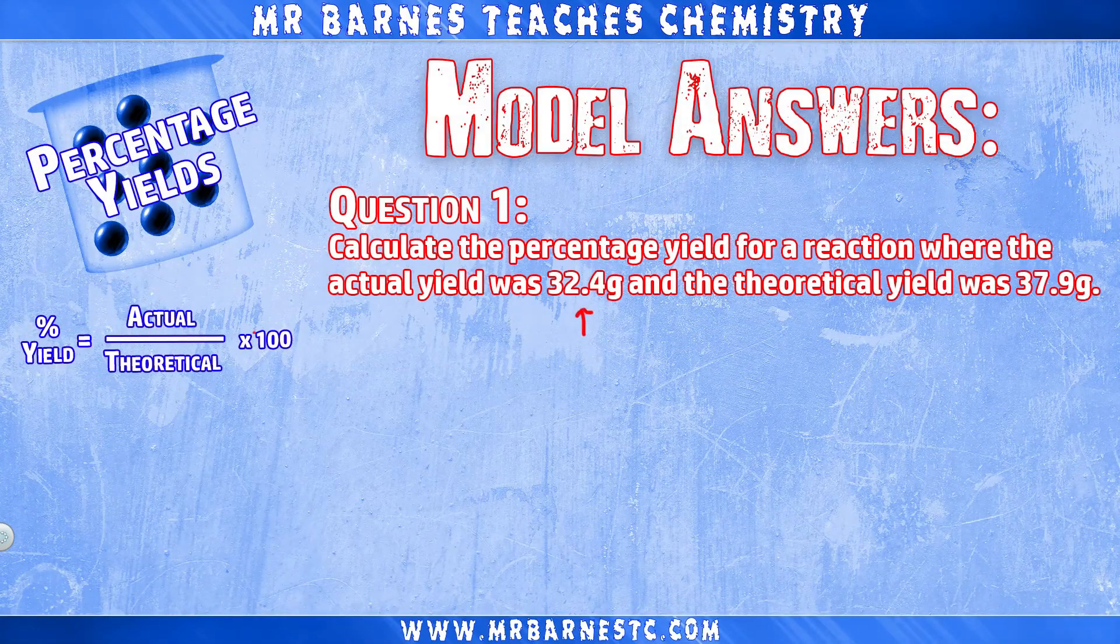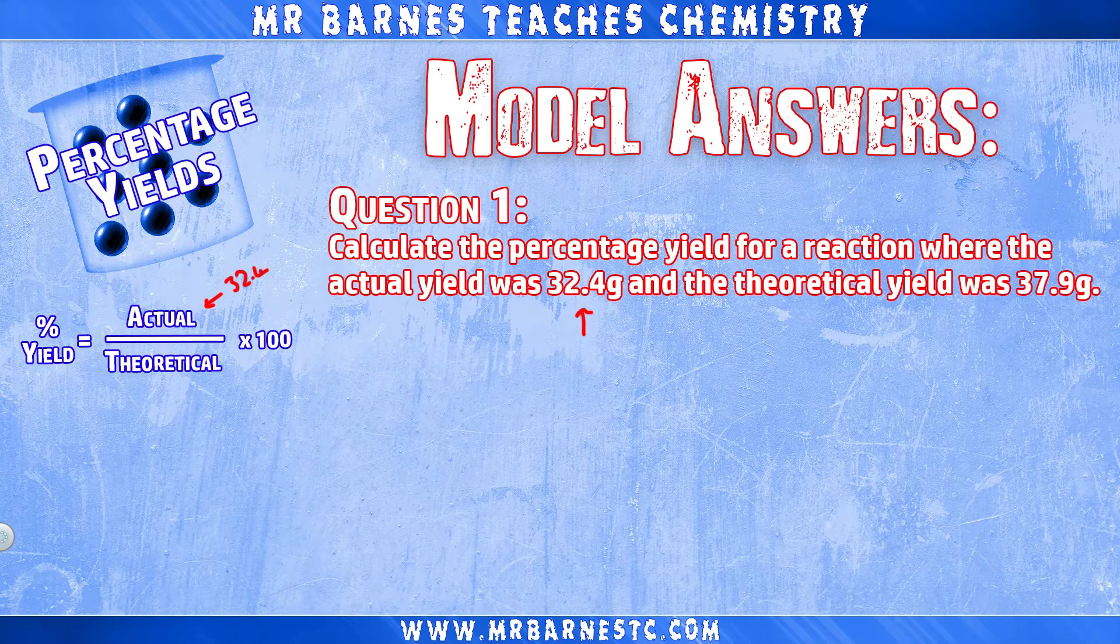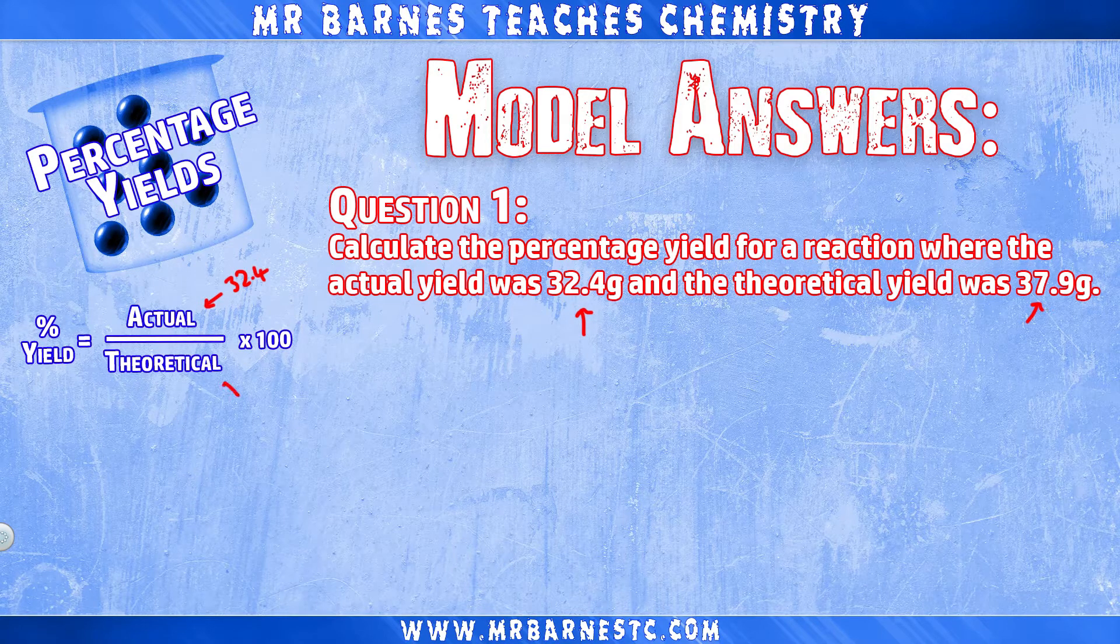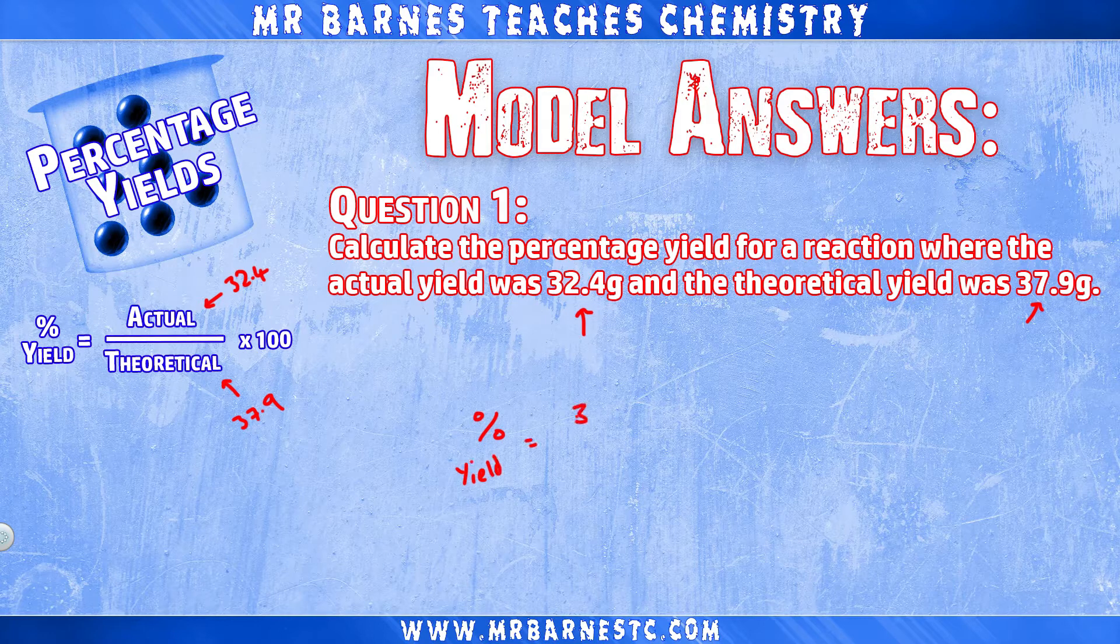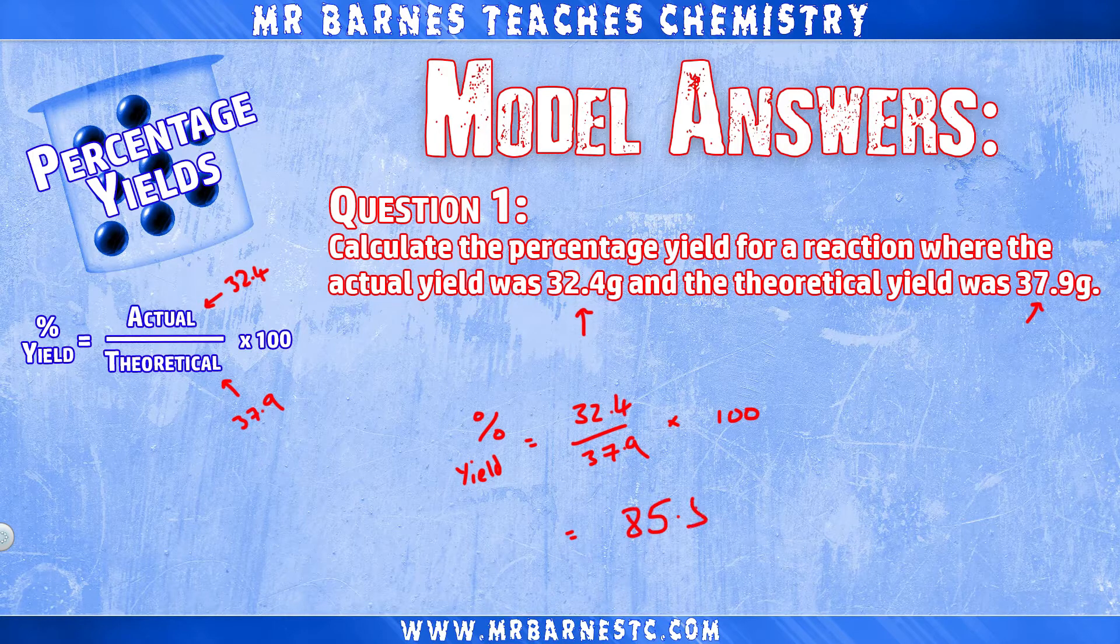Okay, let's go through question one. Nice and simply, we have the actual yield of 32.4 grams and the theoretical yield of 37.9. So 32.4 divided by 37.9 multiplied by 100 gives us an answer of 85.5% for our full marks.